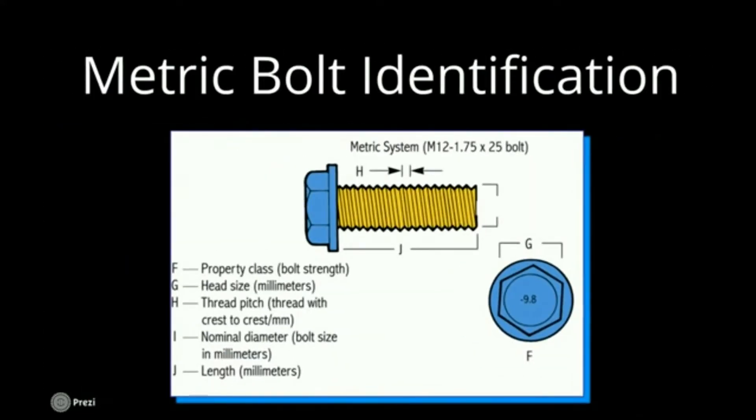On a metric bolt, it's very similar. The only two differences are that the bolt grade, F here, is not dashes but it's a number. It's a way to identify if it's metric or standard. And also, the thread pitch is not in threads per inch but rather in millimeters per thread.